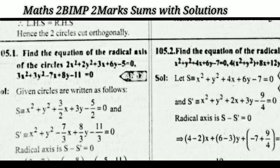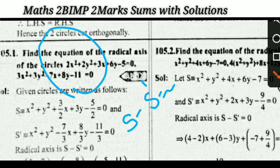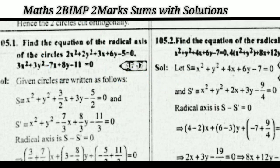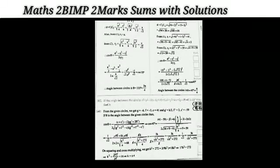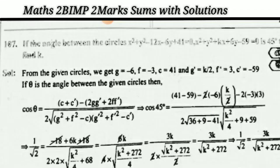Next: find the equation of the radical axis of two circles. The formula is S − S′ = 0, which also gives the equation of the common tangent and common chord. Two questions follow this model. Then find the angle between two circles — another important model with three similar questions.